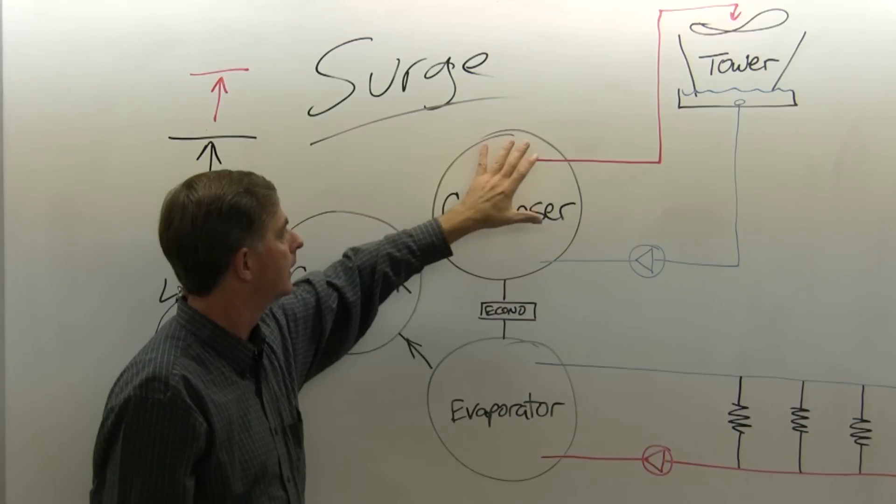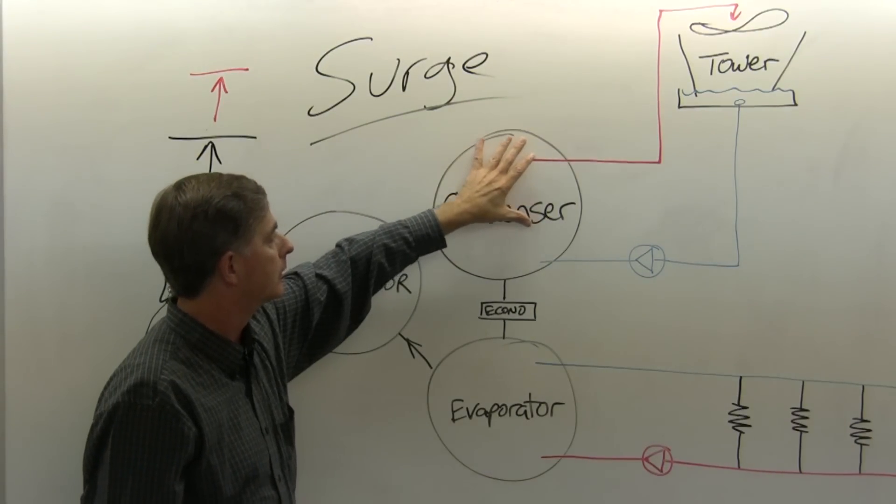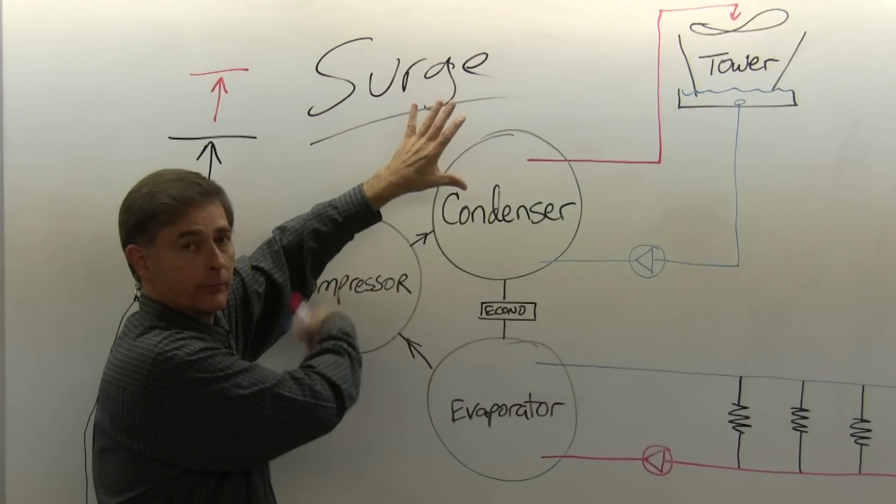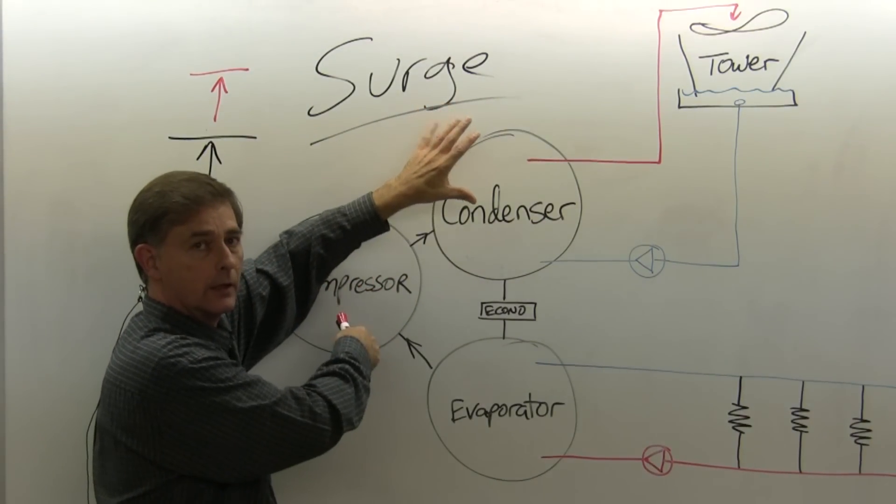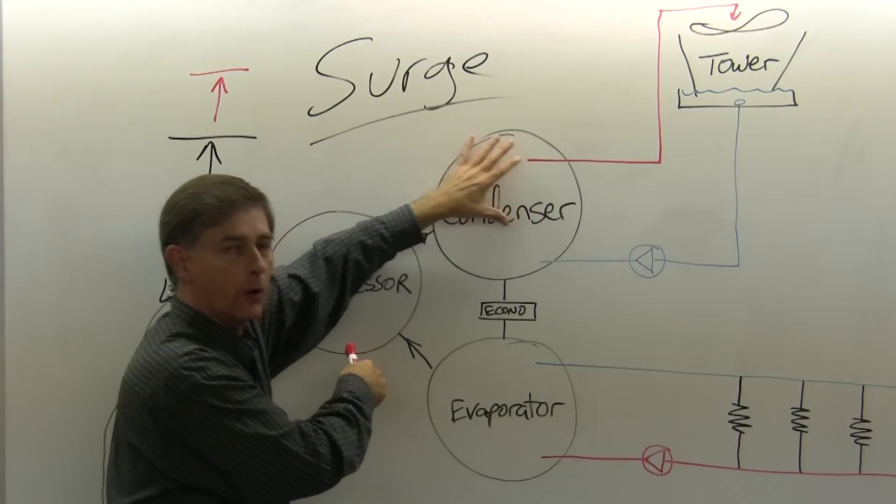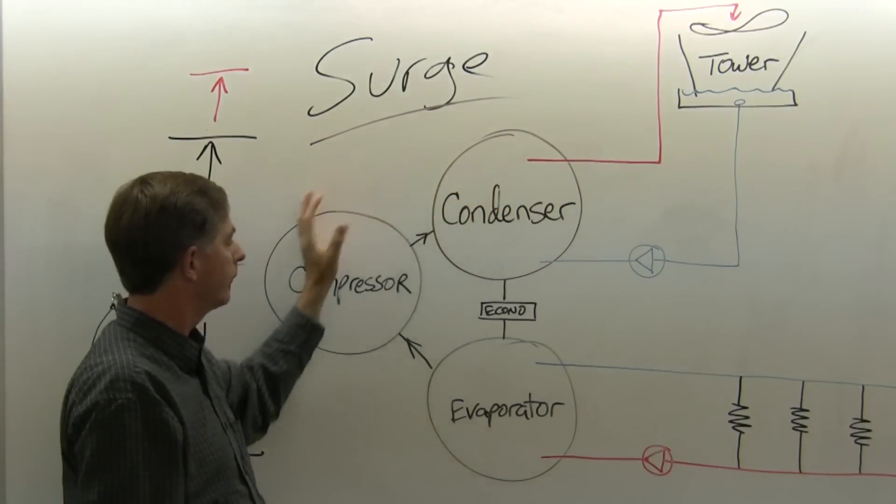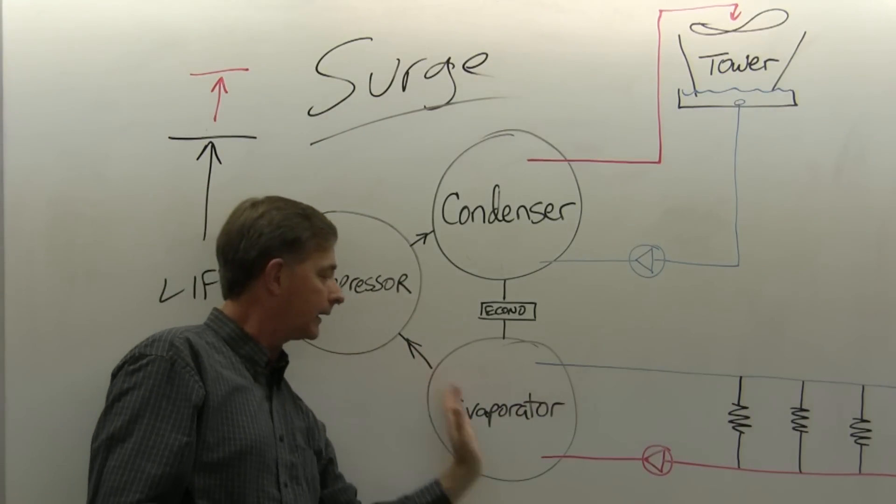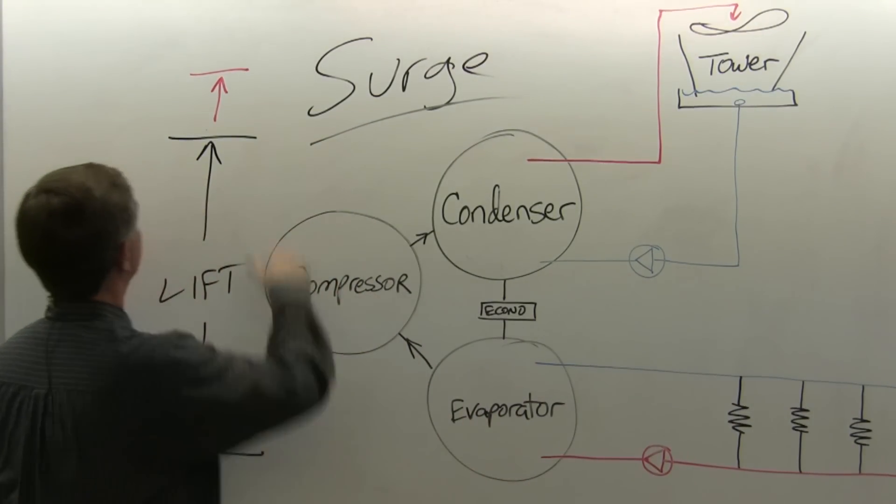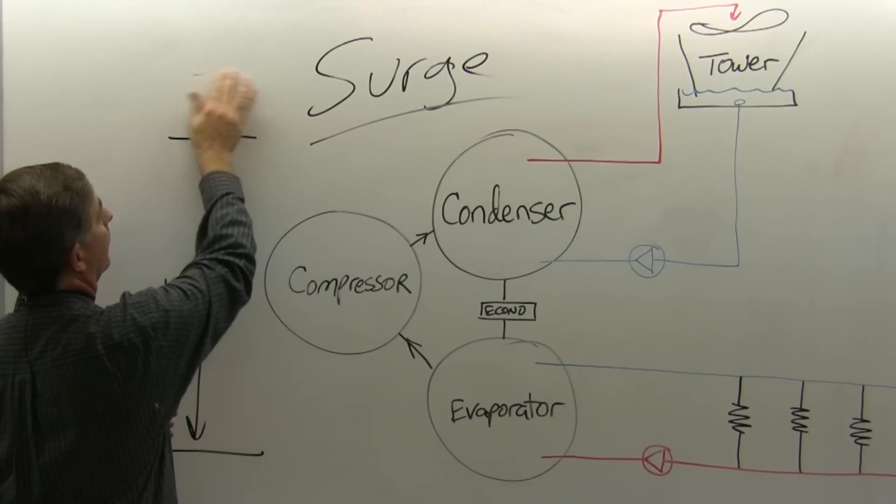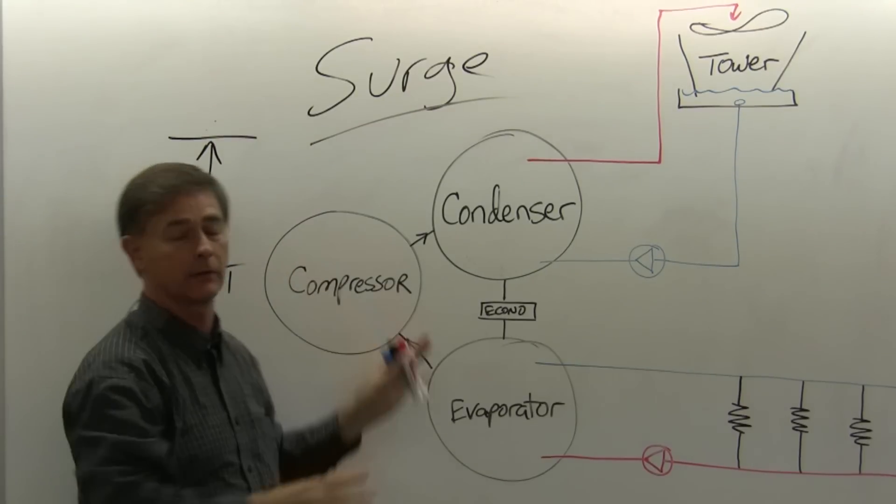And what happens is, although the compressor is turning, the pressure will go backwards through that spinning impeller, it goes backwards through this system, and into the evaporator, which drops our pressure differential, and then it settles out.